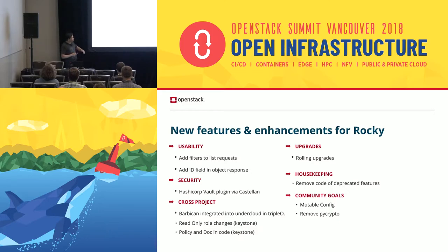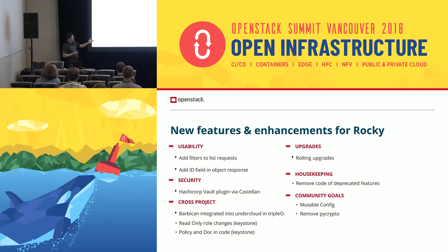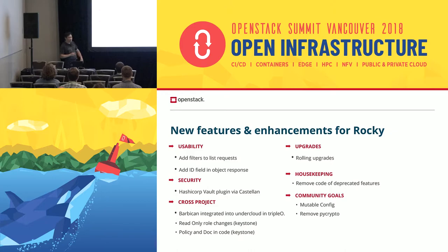There are also some Keystone changes. There's a read-only role — we call it the observer role — which has existed in Barbican for a while, but Keystone is creating its own read-only role, so we're going to make changes to stay consistent with Keystone. Policy-in-code was done in the previous release, but we need to finish the documentation part of that this release. Rolling upgrades was started in the previous release but not yet completed — we're hoping to finish that. There are also some deprecated features we're going to continue to remove, particularly the ability to sign and generate certificates, which has been removed.